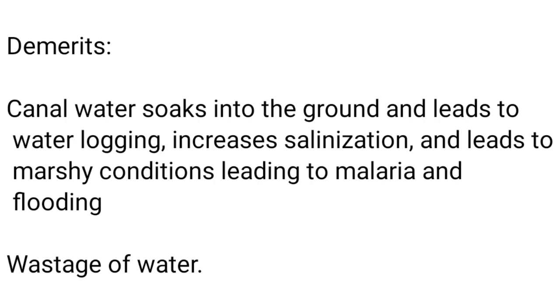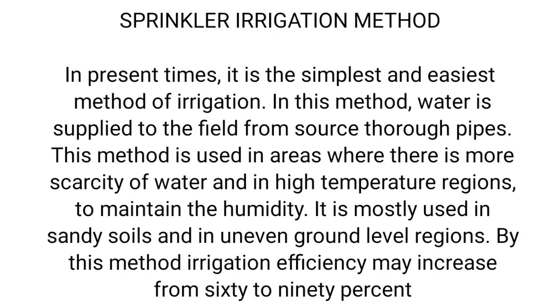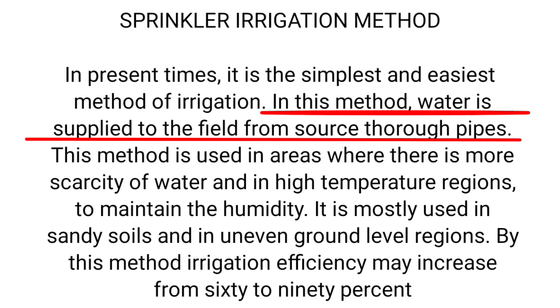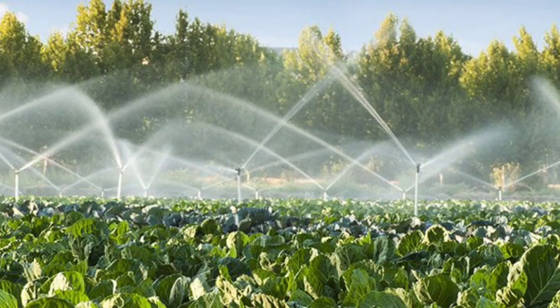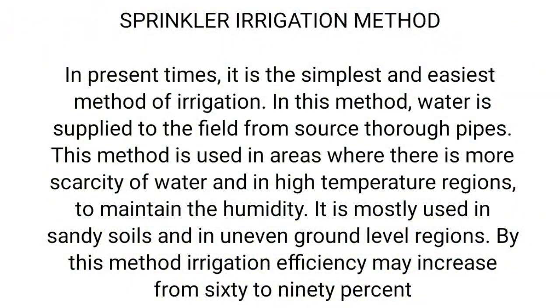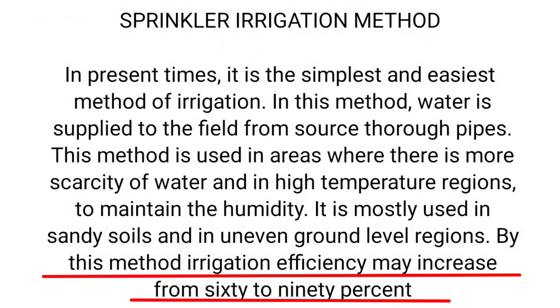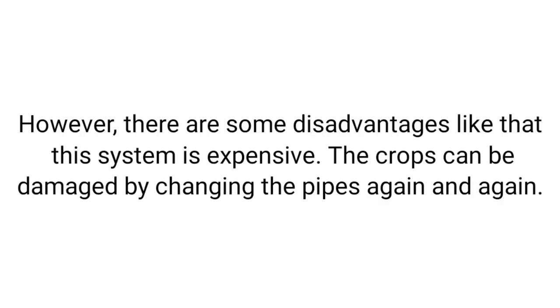Sprinkler irrigation is a modern method where water is supplied through pipes and sprayed over the field. It is increasingly preferred because of the efficient use of water — water efficiency increases up to 60 to 90 percent. However, it is a very expensive method of irrigation.